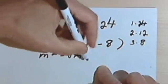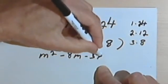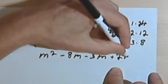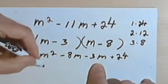The inside terms, negative 3 and m, will give me a negative 3m. And negative 3 times negative 8 will give me a positive 24.